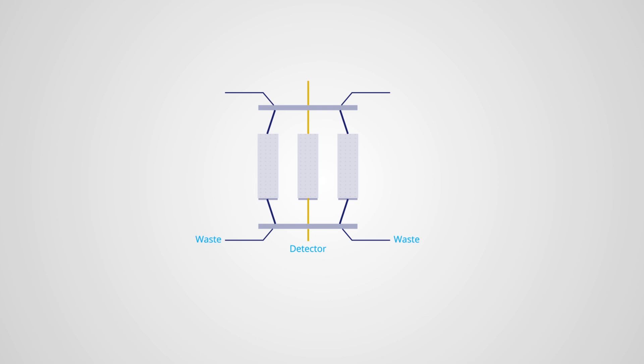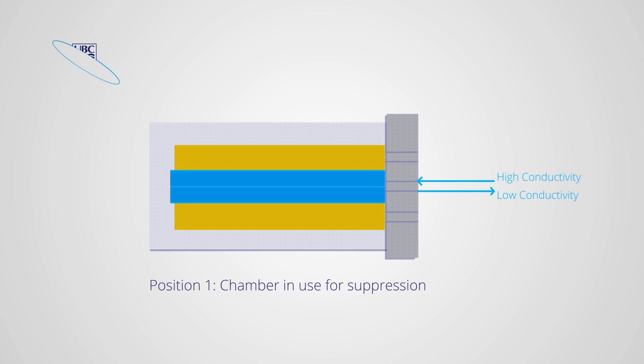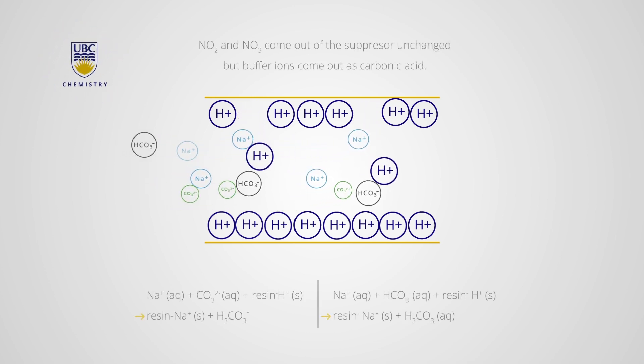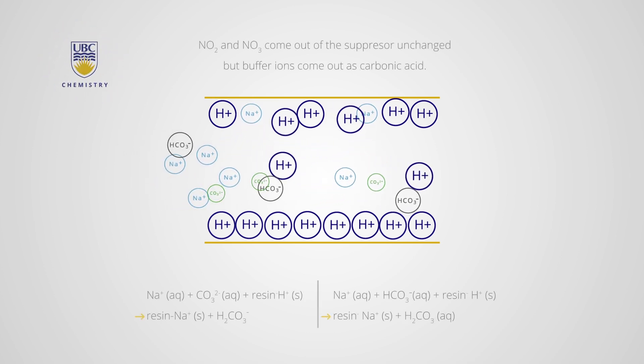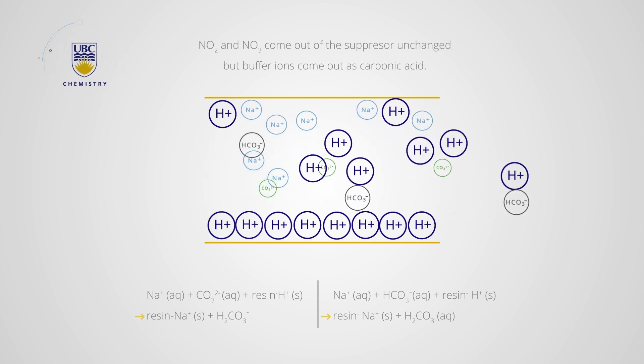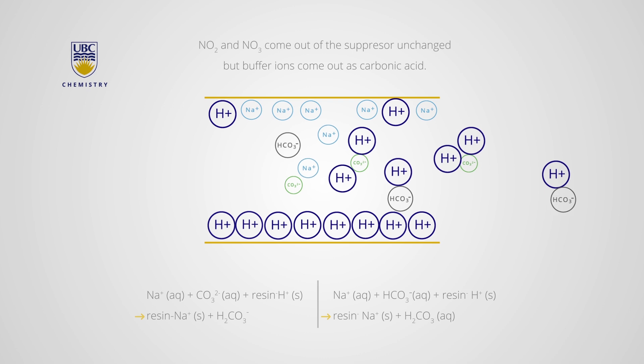The suppressor uses a regeneration process which is carried out in three steps. The first step in the process is where bicarbonate and carbonate anions are converted to carbonic acid. When the analyte comes out of the column, it enters a chamber of the suppressor. Here an ion exchange resin supplies protons which converts the bicarbonate and carbonate anions into carbonic acid.